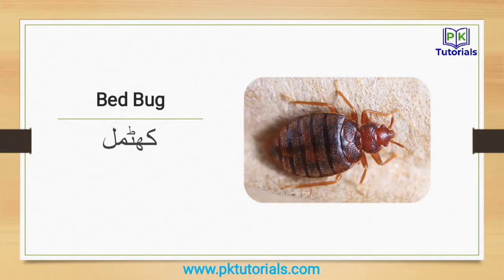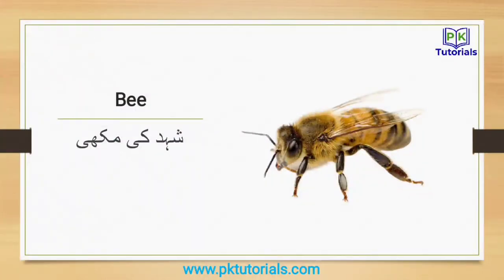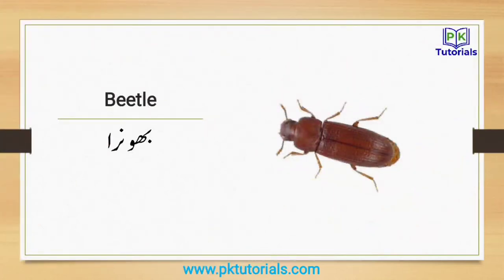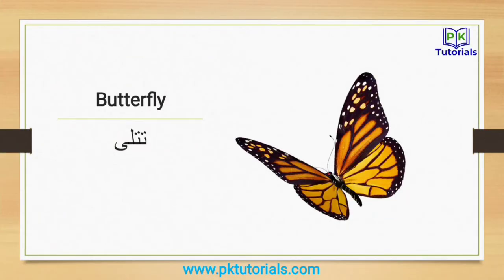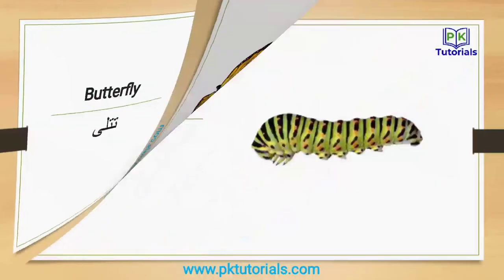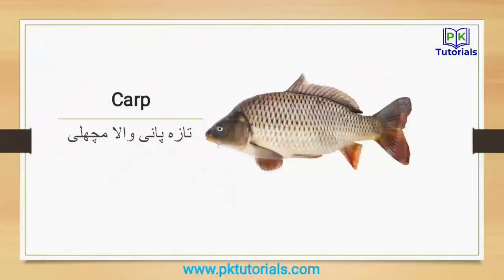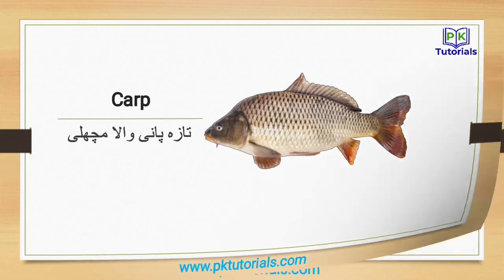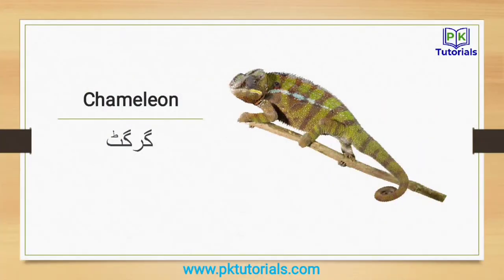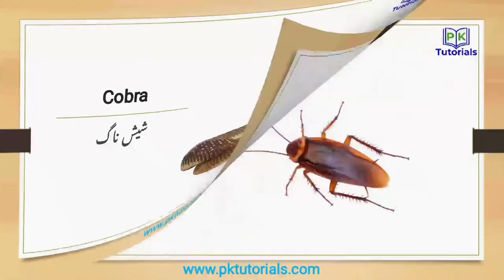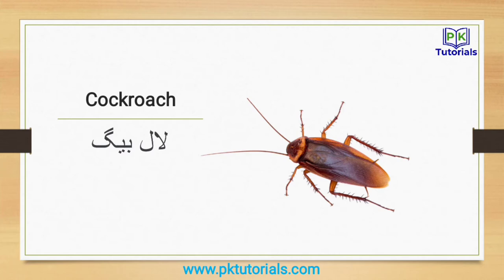Bee: shaitki makki. Beetle: boorah. Butterfly: titli. Caterpillar: sundi. Carp: tazi pani wala machli (fresh water fish). Chameleon: girgat. Cobra: shishnaag, bada saam, shishnaag. Cockroach: lal beg.